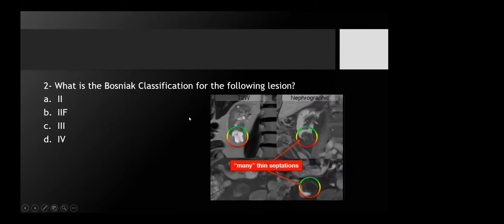This is the second question. Choose the Bosniak classification. The descriptors are shown in the picture: a cystic region within the right lower pole with many thin septations. Almost 88% of you chose the second option, which is the correct answer. I'll describe more during the talk.